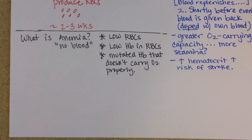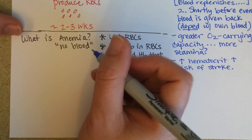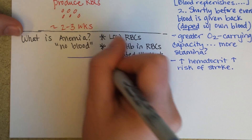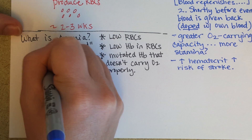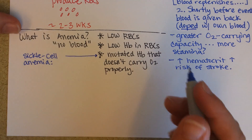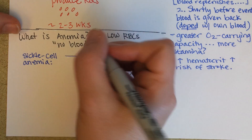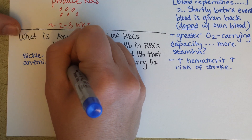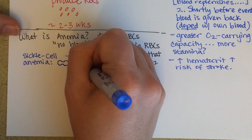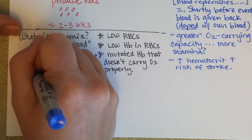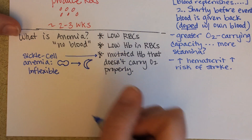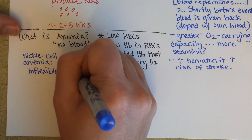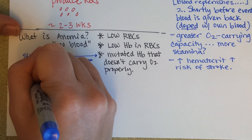You may have heard of sickle cell anemia. Under stress — whether emotional or physical — the red blood cell changes from its normal shape to an inflexible sickle shape. That's where it gets its name. It's inflexible and can't fit through the capillaries anymore, which clogs up vessels and causes mini strokes.